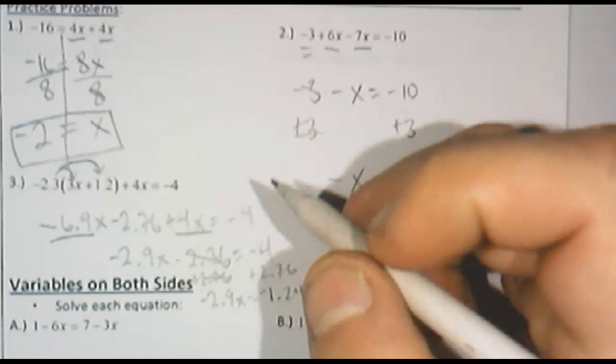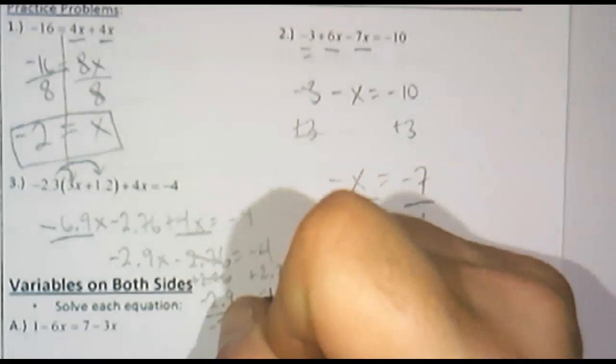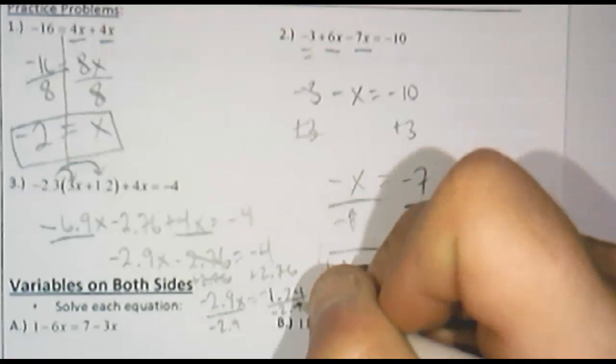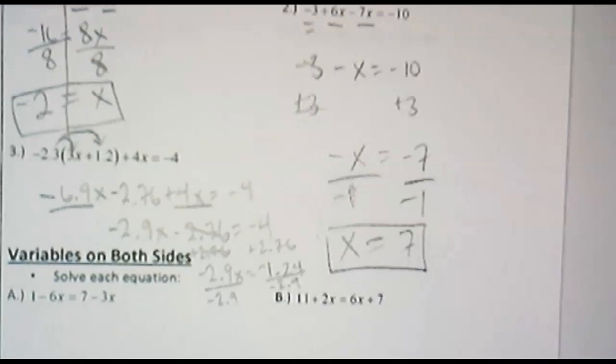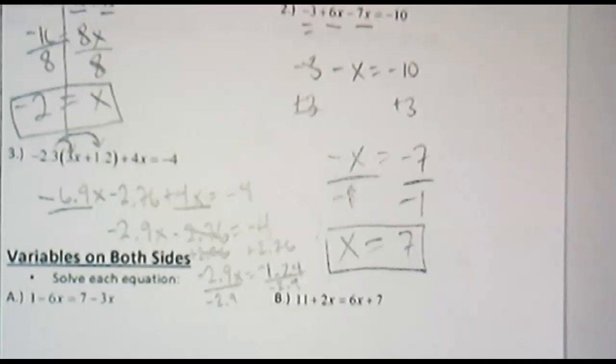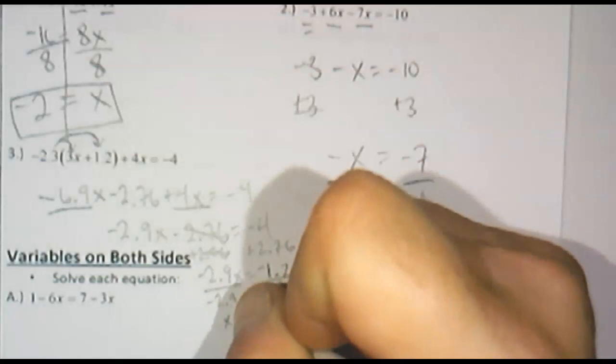My last step here. This is getting a little sloppy with whatnot. I don't have space. And the decimals aren't that fun. But last step, divide by negative 2.9. I know a negative number divided by negative number is going to be positive. And let's just use a calculator to wrap this up. 1.24 divided by 2.9. It's going to be a positive because a negative number divided by a negative number is positive. And it's 0.4275. Let's just round that to 0.43. So on this one, x is approximately 0.43. That one was pretty nasty.